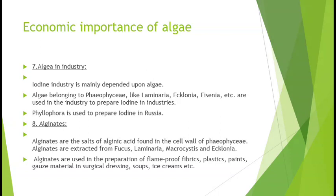Carrageenan jo Rhodophyceae jaise Chondrus aadi se prapt hota hai, ye ek jatil polysaccharide hai. Carrageenan ka upyog — medicines, dant manjan ke paste banaane, bakery udyog, paneer, pho noo ke ras, kagaj, kapda udyog, aur rang banaane mein kiya jaata hai.